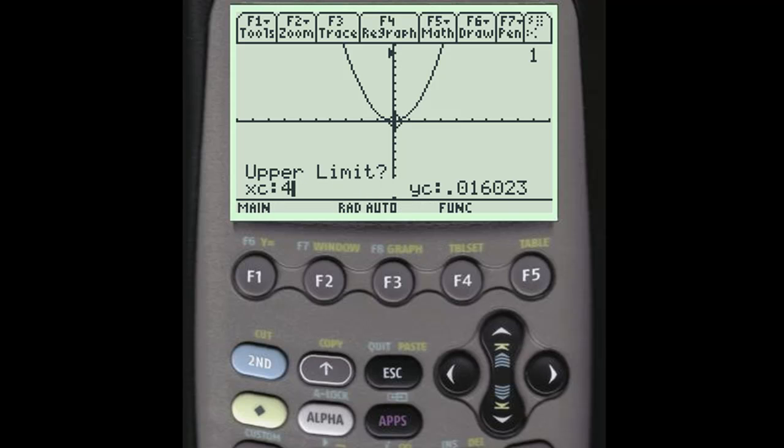Enter, when they ask you for the upper limit type that in, 4, that's what we're going to do. And it's kind of cool because it'll shade the area for you and then it'll give you a decimal approximation for this shaded area. So that's pretty neat and a handy way if you're already on the graphing screen with your function on the screen, you can certainly do that.